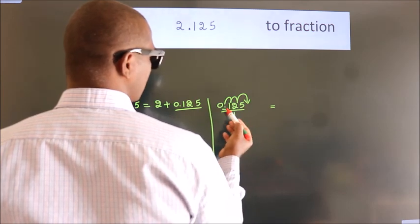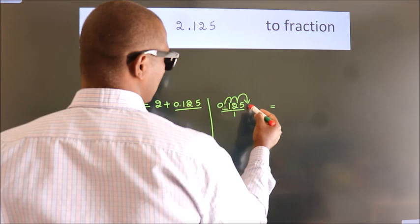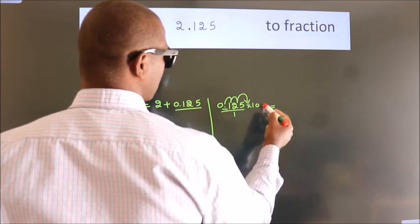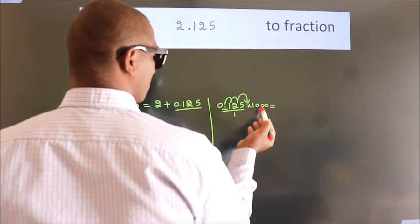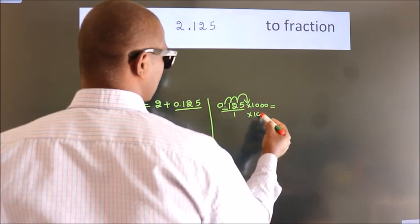To move this decimal after 3 numbers, for that we have to multiply it with 1000. Whatever number you are multiplying in the numerator, in the denominator also do the same.